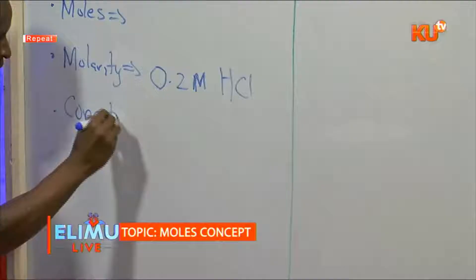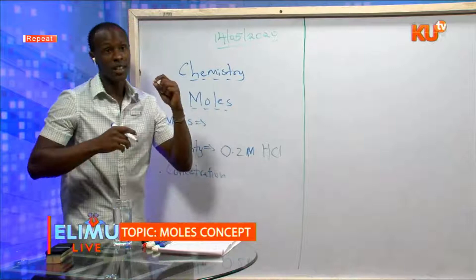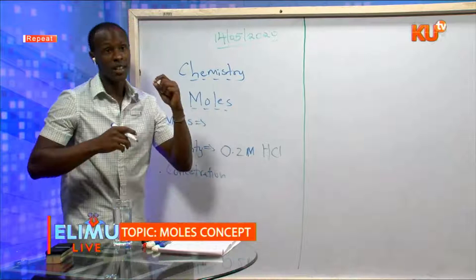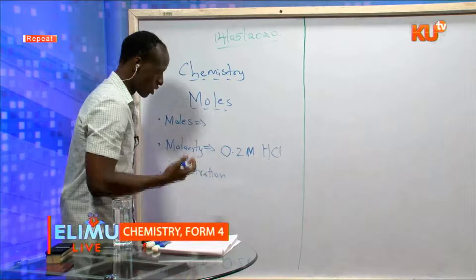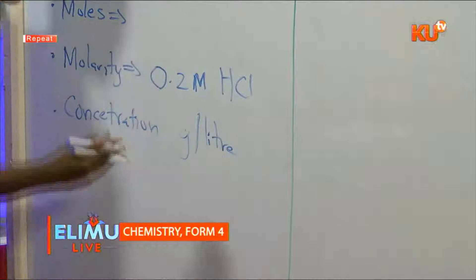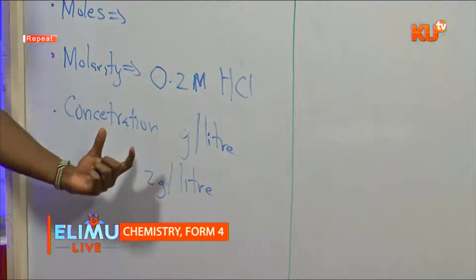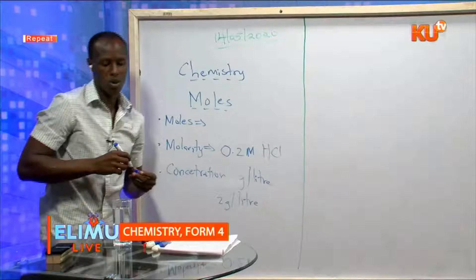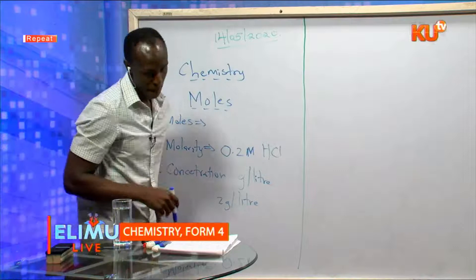The next term is CONCENTRATION. CONCENTRATION and MOLARITY are almost similar. The difference is CONCENTRATION is the number of grams — the mass in grams per liter of a solution — while MOLARITY is moles per liter. For CONCENTRATION, you indicate it in grams per liter; for example, two grams per liter. You can also convert CONCENTRATION to MOLARITY, which we'll look at later.